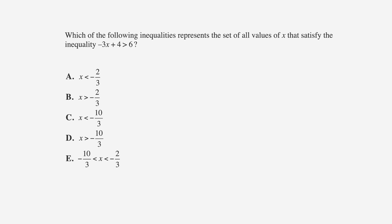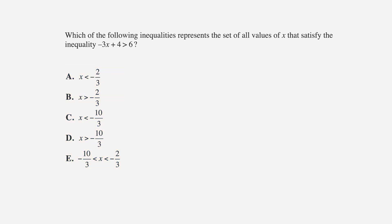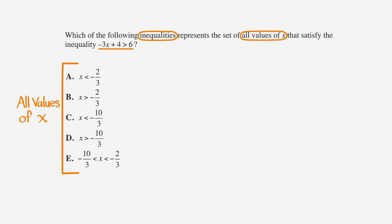Let's apply this to an ACT problem. Which of the following inequalities represents the set of all values of x that satisfy the inequality: negative 3x plus 4 is greater than 6? The answer choices represent all of the values of x that satisfy this inequality. As usual, we'll underline the facts, circle the key words, and label the answer choices.